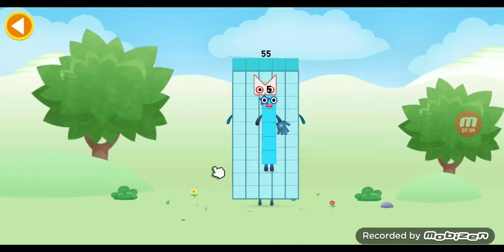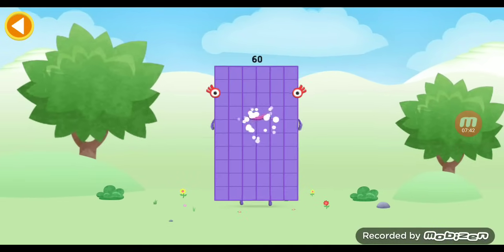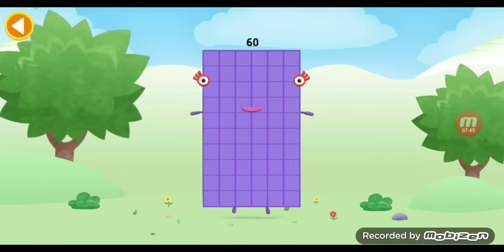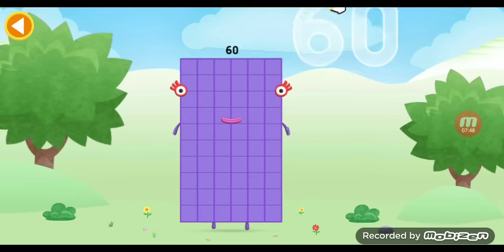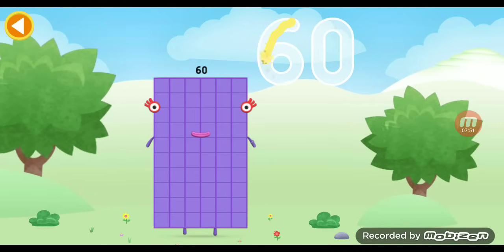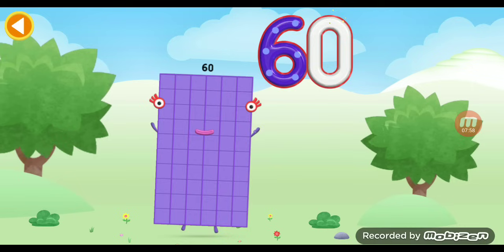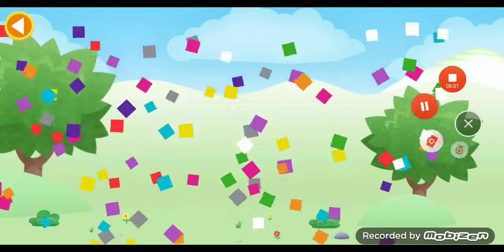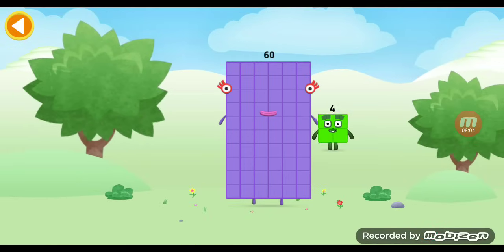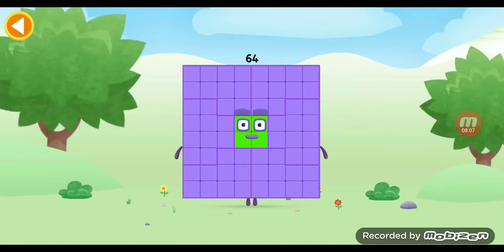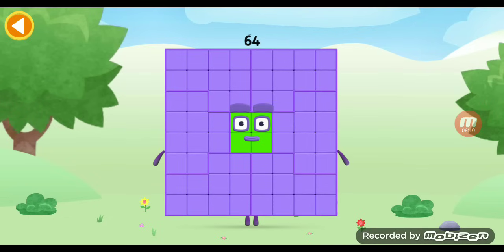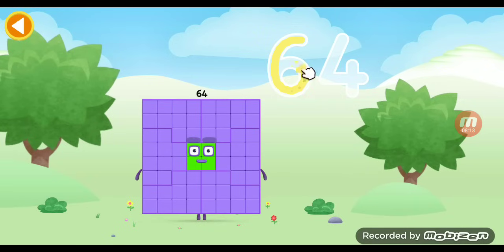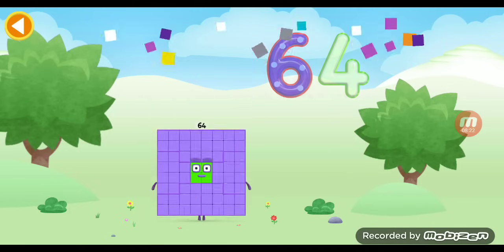You're about to meet number block 55 equals 60. This is number block 60. There is 6. And 0 makes it go. Who tries to use your finger in the screen? Yes! You're about to meet number block 65 plus 4 equals 64. Well done. This is number block 64. I am 64. And I can be a strong square. Well done.